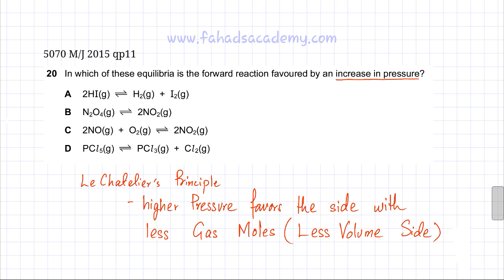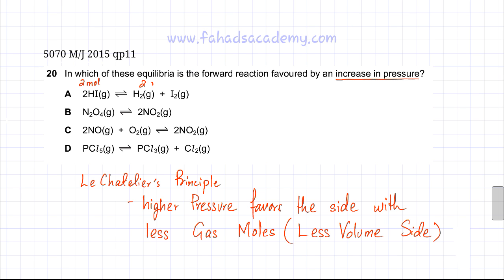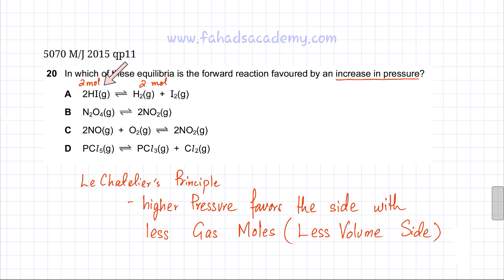Looking at option A, you have two HI molecules in gaseous state — that's 2 moles — and in the products you have a hydrogen molecule and an iodine molecule, which is also equal to 2 moles. So on both sides you have an equal number of gas molecules: 2 on the left and 2 on the right. If you increase pressure, there is no side with less volume or fewer gas moles, so this equilibrium would not shift toward products or reactants.